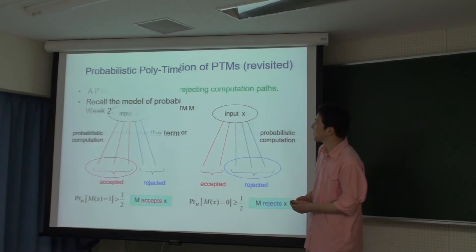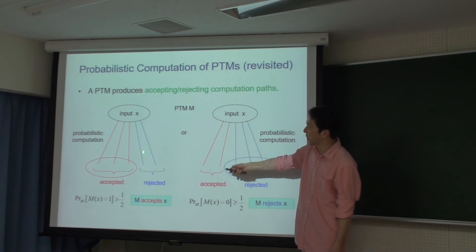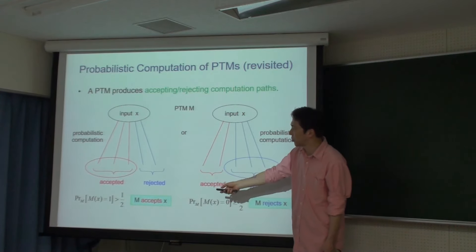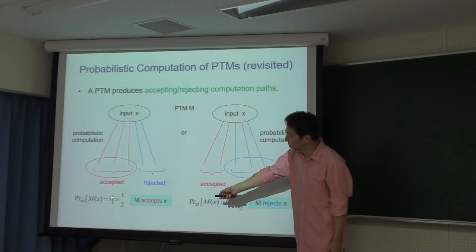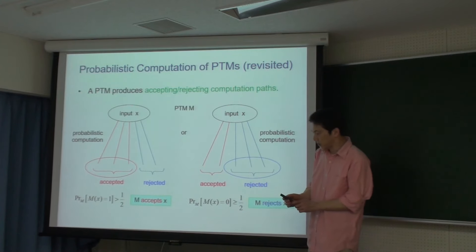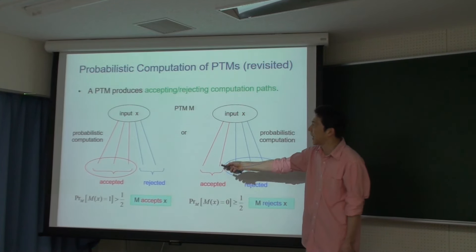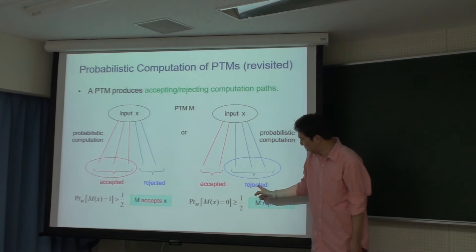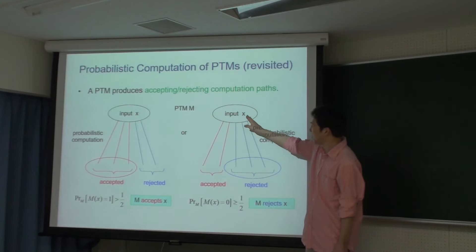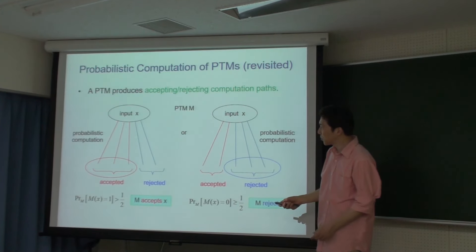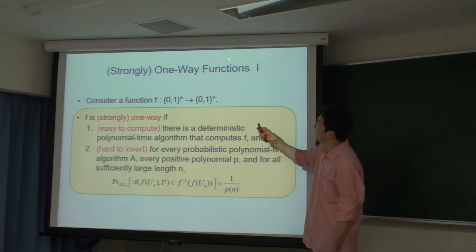確率チューリング機械はWeek2でやりましたが、多項式で計算できるアルゴリズムというのは多項式時間のチューリング機械と同じと思ってください。確率的なアルゴリズムというのは枝分かれをしていきながら計算し、最終的にアクセプトかリジェクトの状態になります。アクセプトになる確率が1/2より大きいときに全体がアクセプト、0になる確率が1/2以上の場合はリジェクトとします。